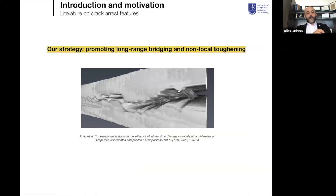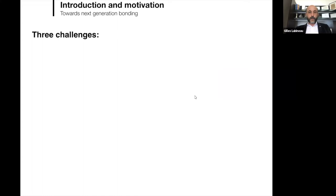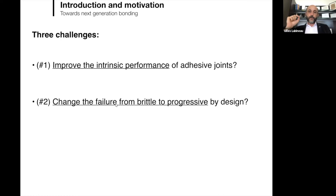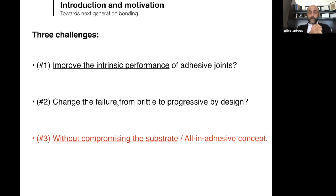Our strategy is based on promoting long-range bridging and non-local toughening. We use the adhesive layer to promote long-range bridging ligaments that bridge both substrates, and this non-local bridging contributes greatly to toughening the joint. We have three main challenges: improving intrinsic performance of the adhesive joint, but more importantly, changing the failure mode from brittle to progressive by design — ensuring time to inspect and maintain. We also want to do this without compromising the substrate, using an all-in-adhesive concept where we only modify the adhesive.